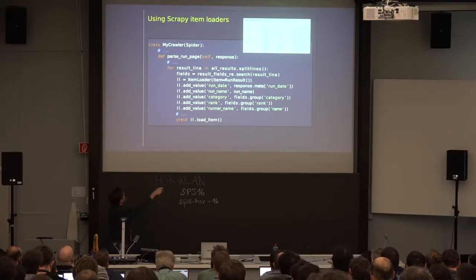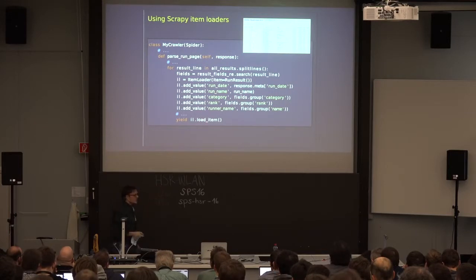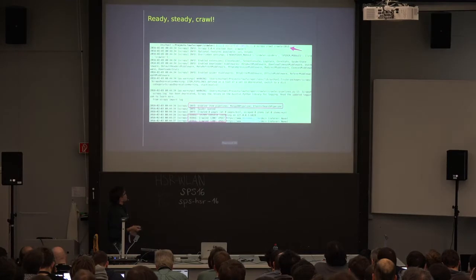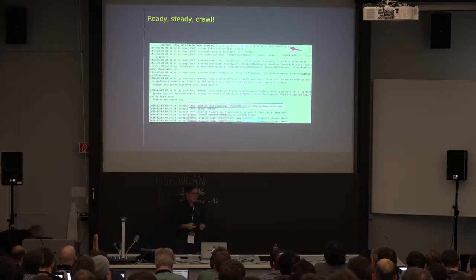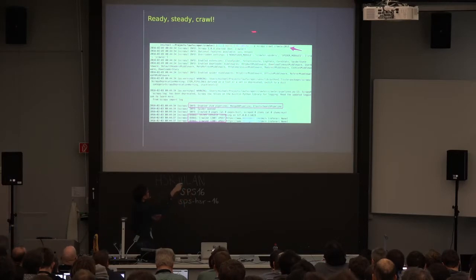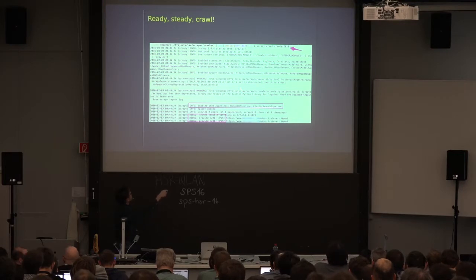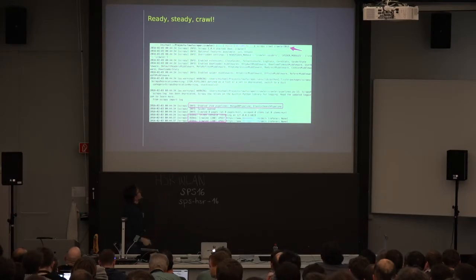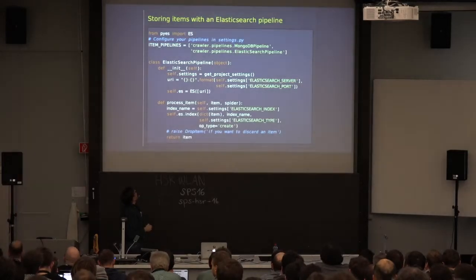You use them like this: generate an item loader, add your values, call load_item, and Scrapy passes them through your defined input and output processors to execute your data mangling. So now we have our spider — let's start it. You execute 'scrapy crawl' with the spider name and see a bunch of output. I've marked important things like the data pipelines. I have two pipelines: one for demonstration purposes to store items in MongoDB, and the other to index them with Elasticsearch. You can also see the two POST requests being executed to the running site.